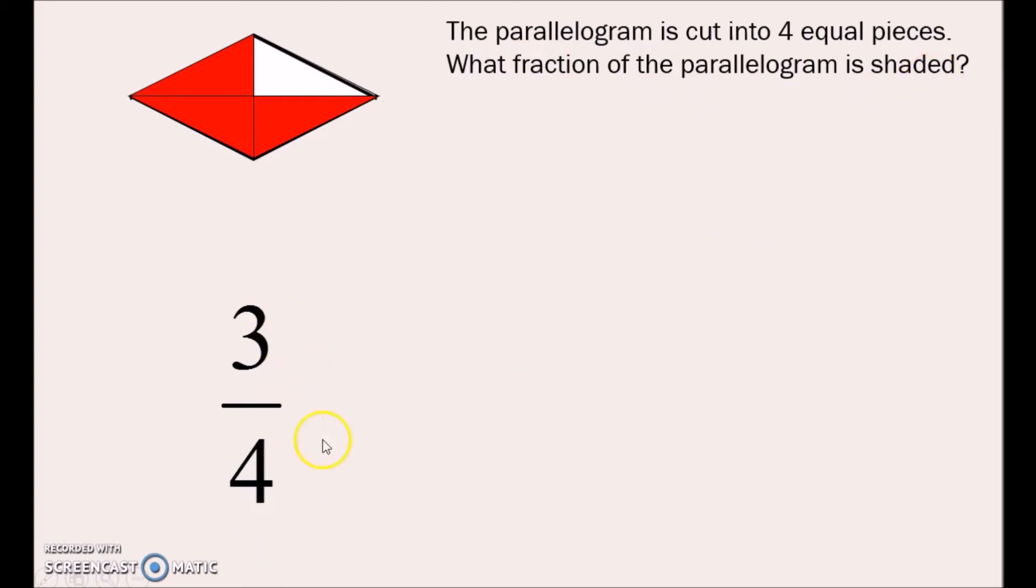The fraction is made up of two numbers. The number on the bottom is called the denominator and it tells me the total number of pieces. The number on the top is called the numerator and it tells me the number of pieces that are shaded.